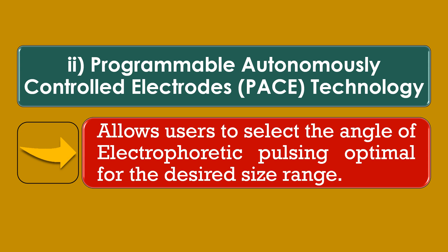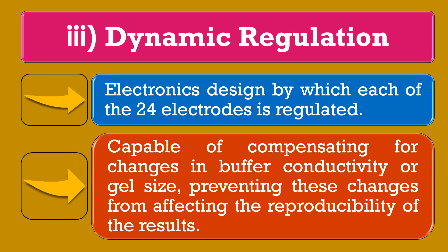The second type is Programmable Autonomously Controlled Electrodes technology, or PACE technology. This PACE technology allows users to select the angle of electrophoretic pulsing, which is optimal for the desired size range.